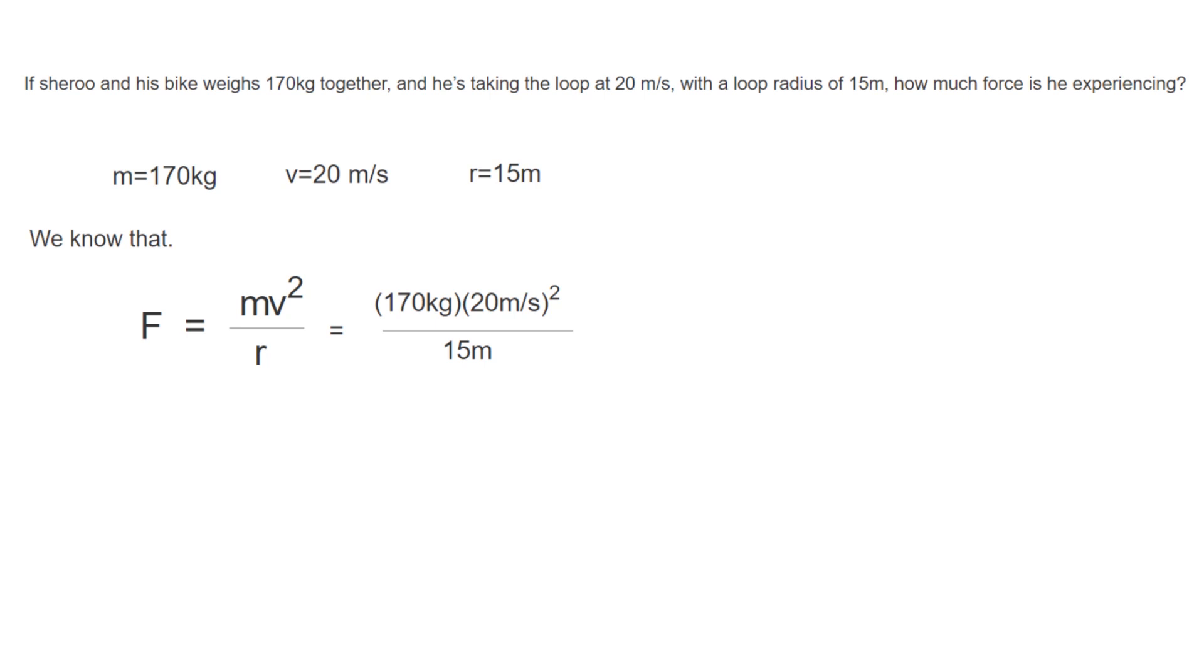Let's put the given values in the formula. Let's solve for the square first. And now we will multiply 170 with 400 to get 6,800.